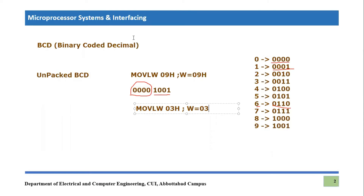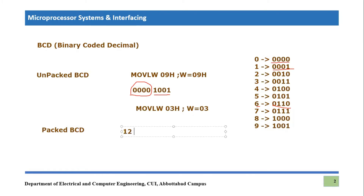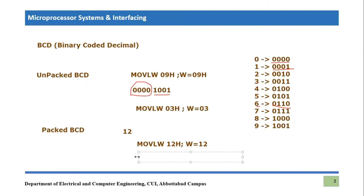The second type is called packed BCD. As the name suggests, two BCD numbers are packed together. For example, for the BCD number 12, we write 'Move Literal to Working, 12h'. Converting to binary: 1 becomes 0001 and 2 becomes 0010, so all eight bits are used — both the lower nibble and higher nibble — containing two BCD numbers joined together.